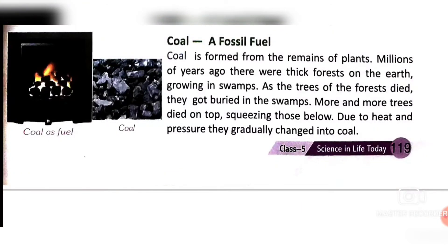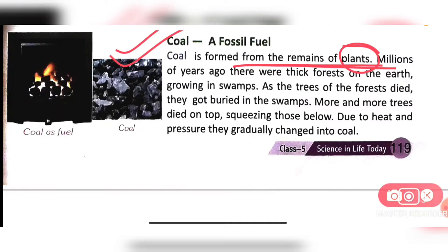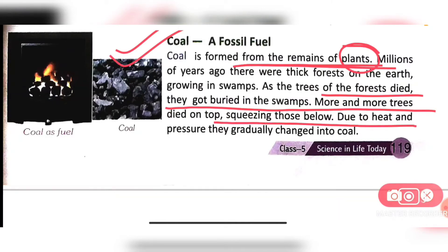The first fossil fuel is coal. Coal is mainly formed from the remaining of plants - plant bodies change into coal, there are no animals involved, just plant bodies. Millions of years ago there were thick forests on earth growing in swamps. As the trees of the forest died, they got buried in the swamps one by one. More and more trees died on top, squeezing those below, and due to heat and pressure they gradually changed into coal.